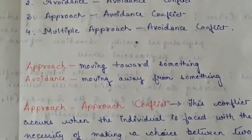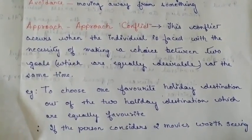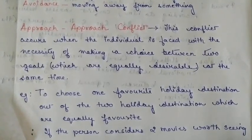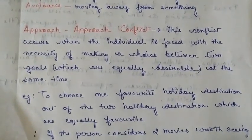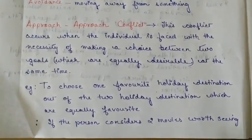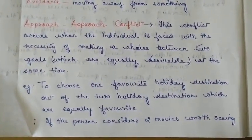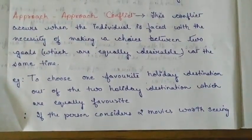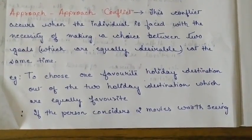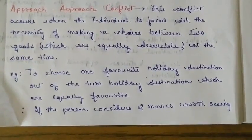Approach means moving towards something and avoidance means moving away from something. A person experiences approach-approach conflict when he has to choose between two equally desirable goals that occur at the same time. For example, suppose you have two favorite holiday destinations but cannot choose both at the same time — you have to give up one. Another example: a person considers two movies worth seeing, but does not have enough money to watch both, so he has to select one.